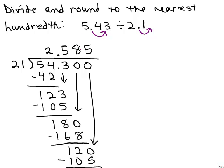If I want to round this to the nearest hundredth, I notice that I have a five in the thousandths place, so this gets rounded up to 2.59. So the answer is 2.59.